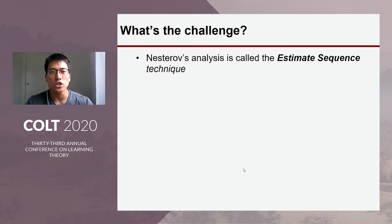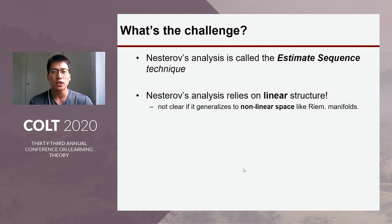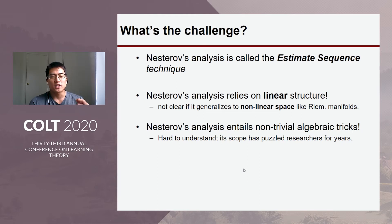So, what's the challenge? It turns out Nesterov's original analysis for the Euclidean case called estimate sequence technique heavily relies on linear vector space structure of the Euclidean space. So, it's not clear whether we can generalize this technique to non-linear space like Riemannian manifolds. And it's in general hard to understand Nesterov's proof technique and its scope has puzzled researchers for many years. So, it's not clear whether his analytic scope covers Riemannian manifold case as well.